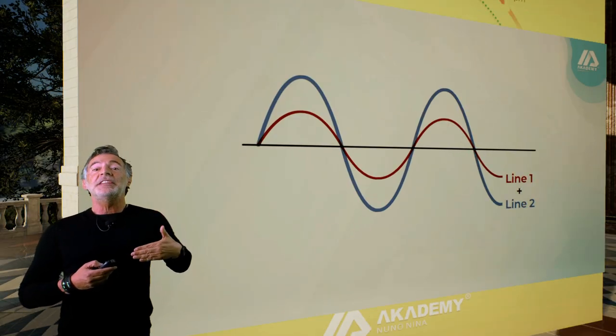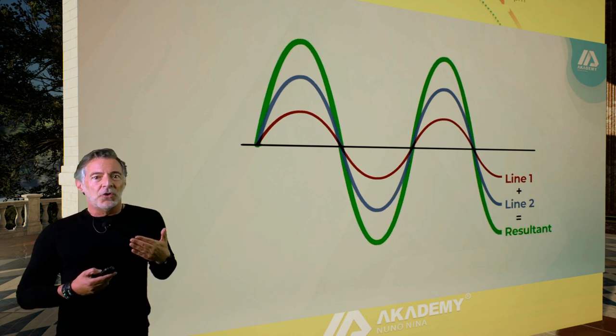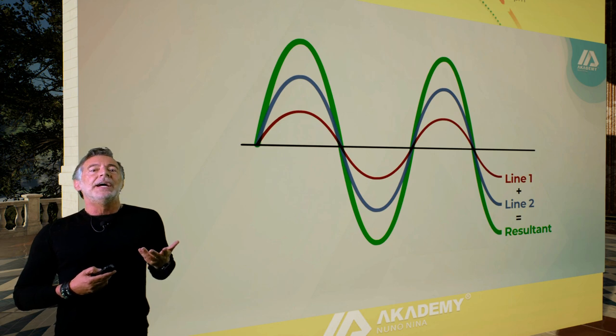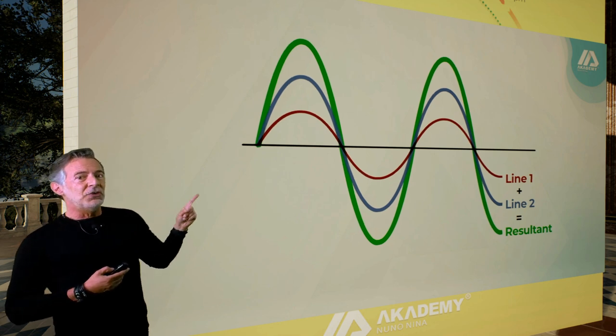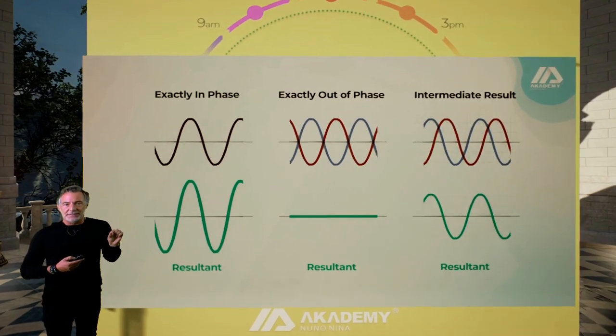When we put two waves together, we create a new wave that we call the resultant, or resultant wave. This slide shows the three main wave combinations and the resultant.